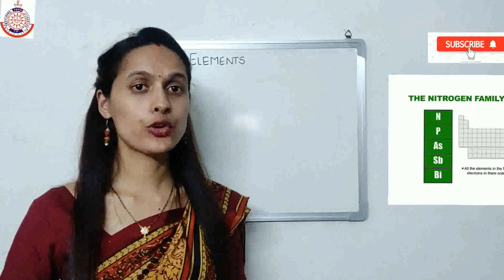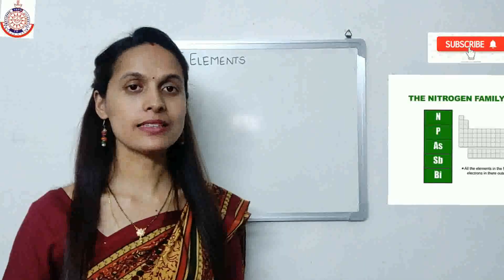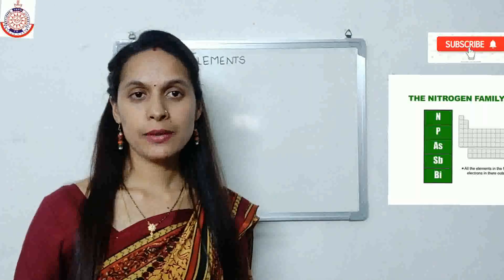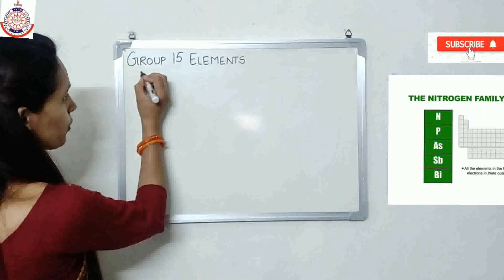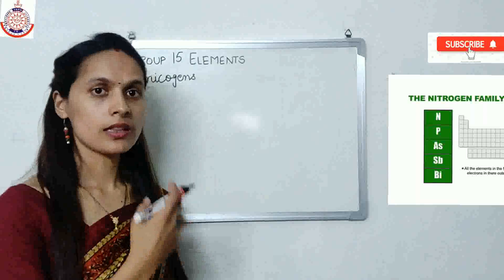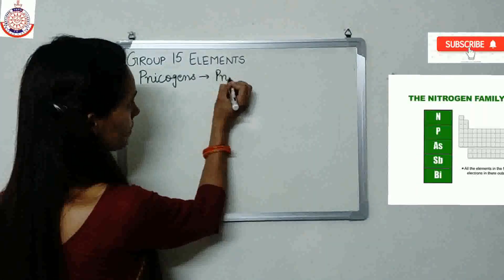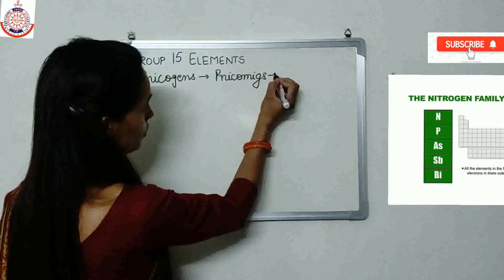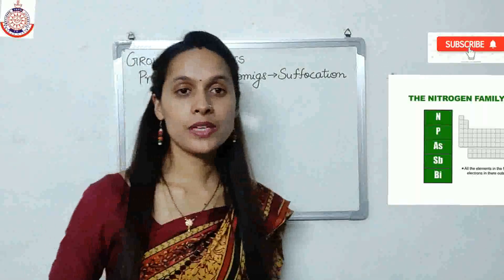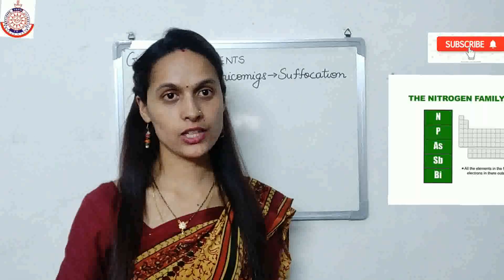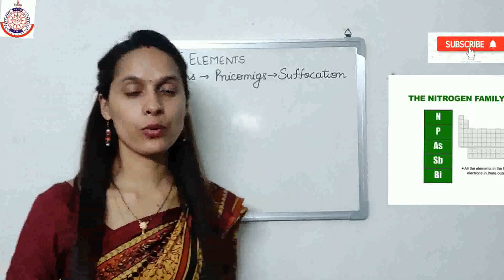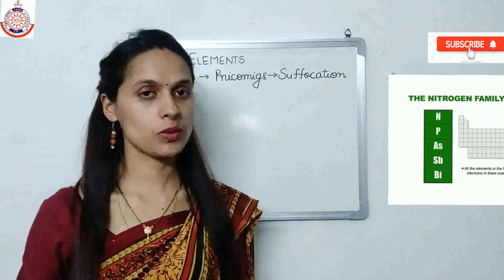In this video, we'll start Group 15 Elements, that is the Nitrogen Family. The elements of Group 15 are known as Pnictogens. The word Pnictogens was derived from the Greek word 'nicomix', which means suffocation. Some chemicals made from the elements of this group cause suffocation, which is why they are termed Pnictogens.